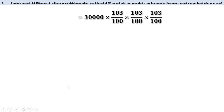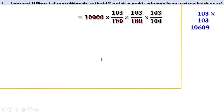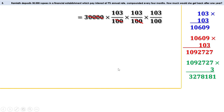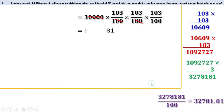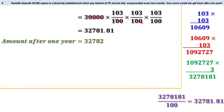This equals 30,000 × 103/100 × 103/100 × 103/100. Cancelling two zeros from numerator and denominator, and then two more, we get 3 × 103 × 103 × 103 divided by 100. Multiplying 103 by 103 gives 10,609. Multiplying again by 103 gives 10,92,727. Multiplying by 3 gives 32,78,181. Dividing by 100 gives 32,781.81 — that is 32,781 rupees and 81 paise. Rounding, we get 32,782 rupees. After one year she will get 32,782 rupees.